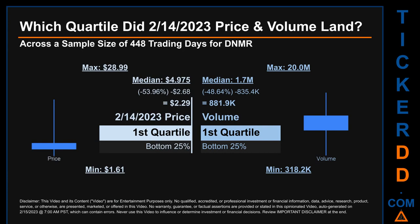Daily volume saw a max of 20 million and a minimum of 318,200. Quartiles tell us about the spread of a data set by breaking it into quarters, just like how the median breaks the set in half. Descriptively, DNMR has a median price of $4.975. Therefore, February 14th, 2023's price was lower than that middle marker by 53.96%. The day's volume of 881,900 was less than the median by 48.64%.